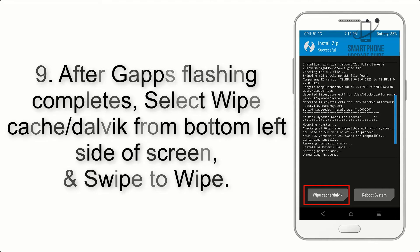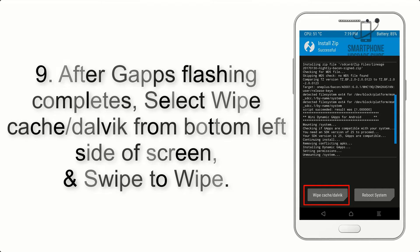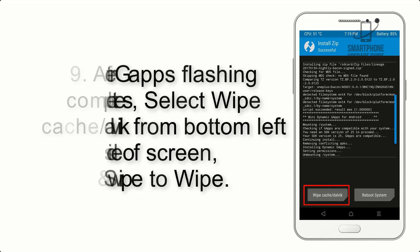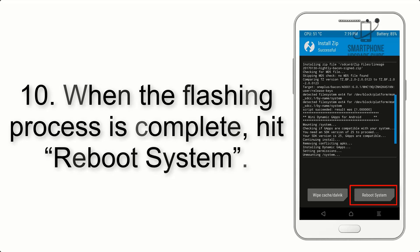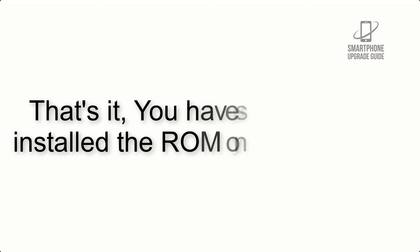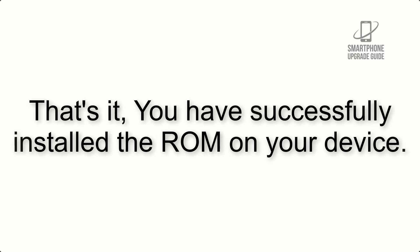Step 8: Flash the GApps zip package in the same manner. Step 9: After GApps flashing completes, select Wipe Cache and Dalvik from the bottom left side of the screen and swipe to wipe. Step 10: When the flashing process is complete, hit Reboot System. That's it — you have successfully installed the ROM on your device.